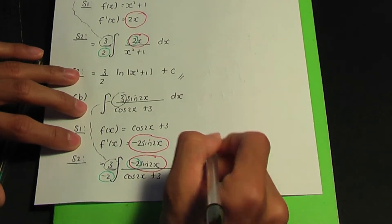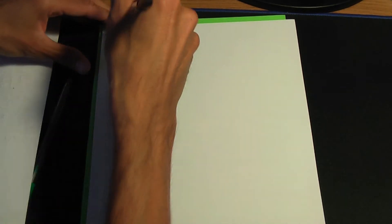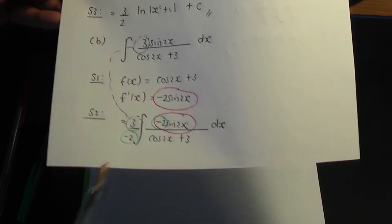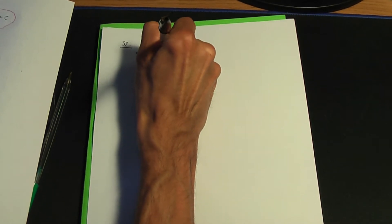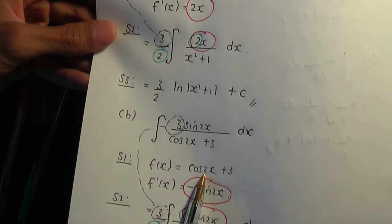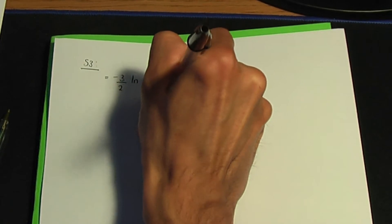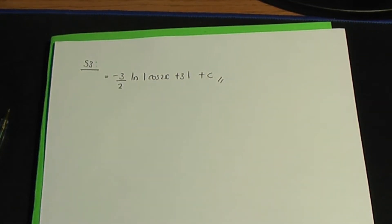Step 3: applying the result, our answer is minus 3 over 2 times ln the modulus of cos 2x plus 3, plus c. That is your final answer for part b.